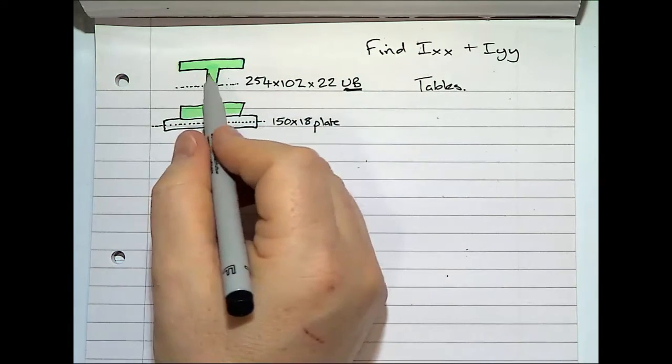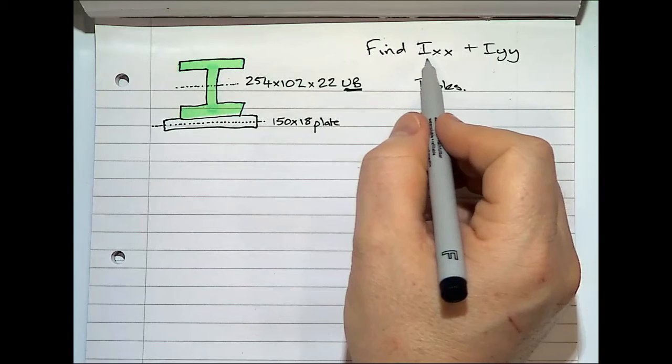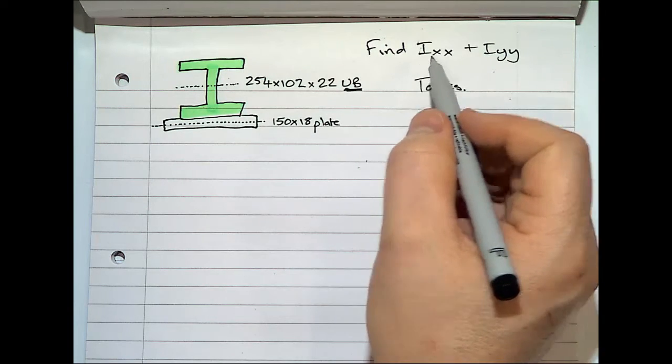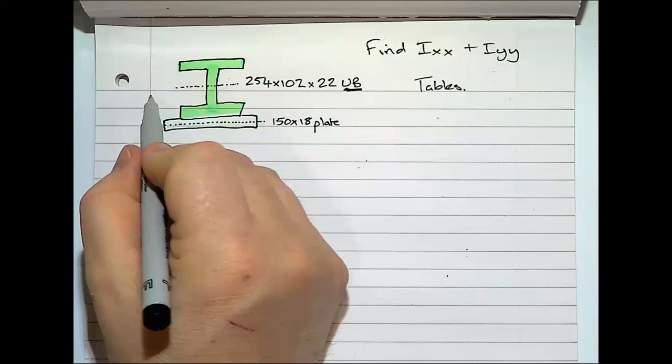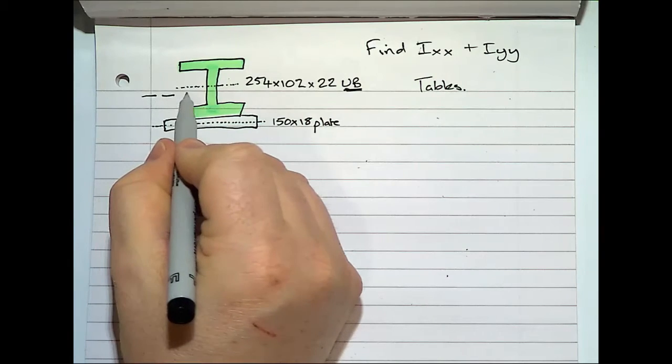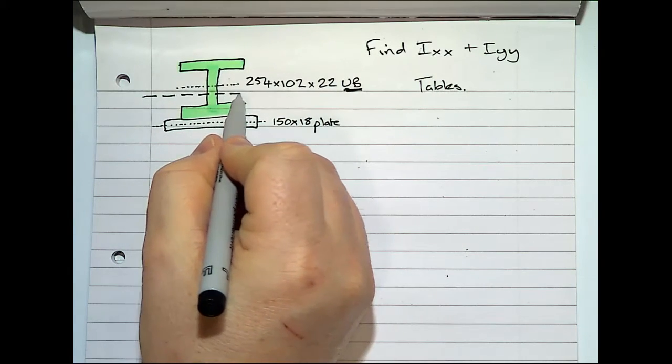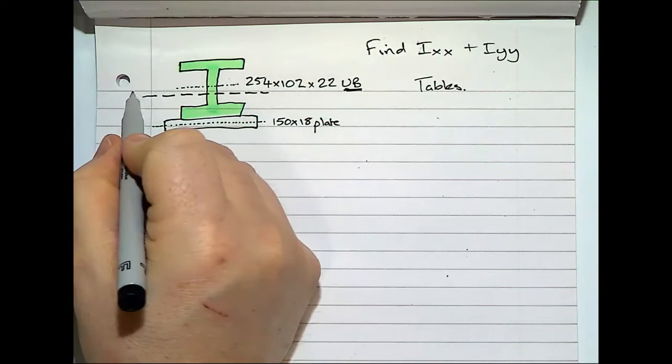When you add them both together, when we work out what the overall I-values are for the compound, you'll find that it'll be round about here. So that will be our Z.